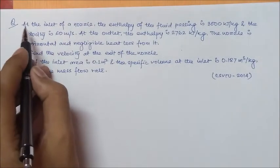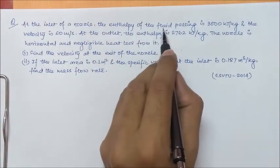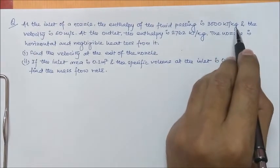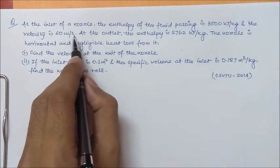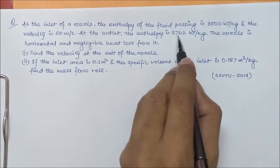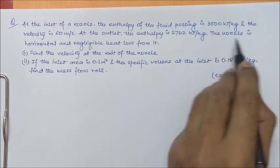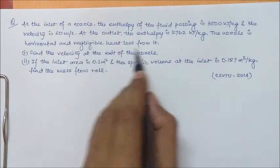The question is like this. At the inlet of a nozzle, the enthalpy of the fluid passing is 3000 kJ per kg and the velocity is 60 m per second. At the outlet, the enthalpy is 2762 kJ per kg. The nozzle is horizontal and negligible heat loss from it.